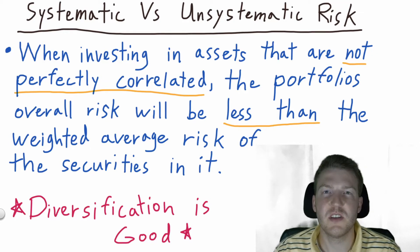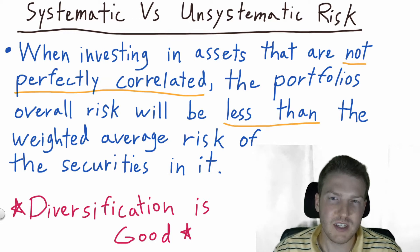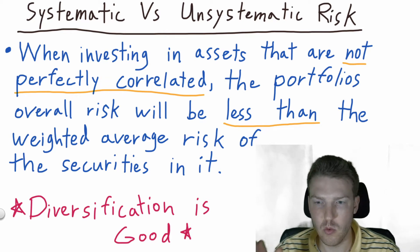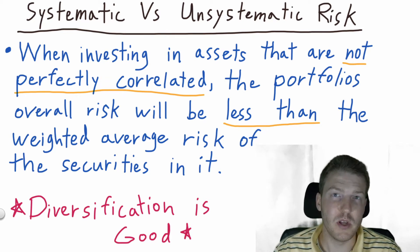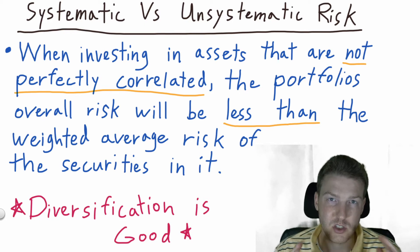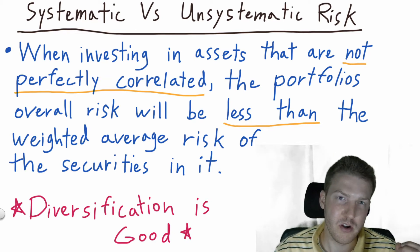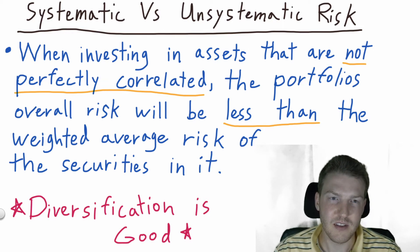Before we get into the definitions of systematic and unsystematic risk, I want to say one thing that I think is going to make this a lot easier to understand. When investing in assets that are not perfectly correlated — meaning they do not move exactly one for one — the portfolio's overall risk will be less than the weighted average risk of the securities in it. From the perspective of portfolio management, diversification is good. This is the old saying: don't put all of your eggs in one basket. You can take less overall risk for the same amount of return by diversifying your assets.